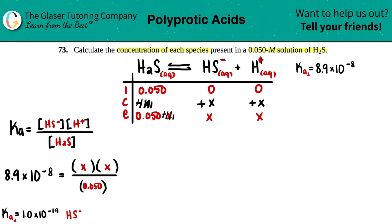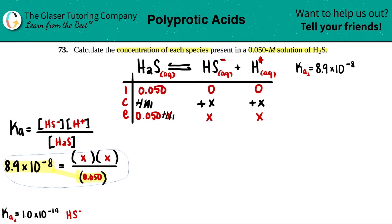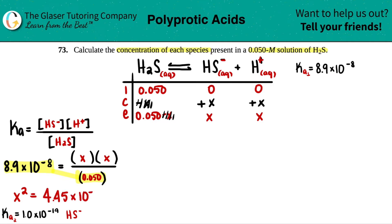Cross multiplying: 8.9 × 10⁻⁸ times 0.05 equals X squared. So X squared equals 4.45 × 10⁻⁹. To get X, we take the square root, giving X equals 6.7 × 10⁻⁵.